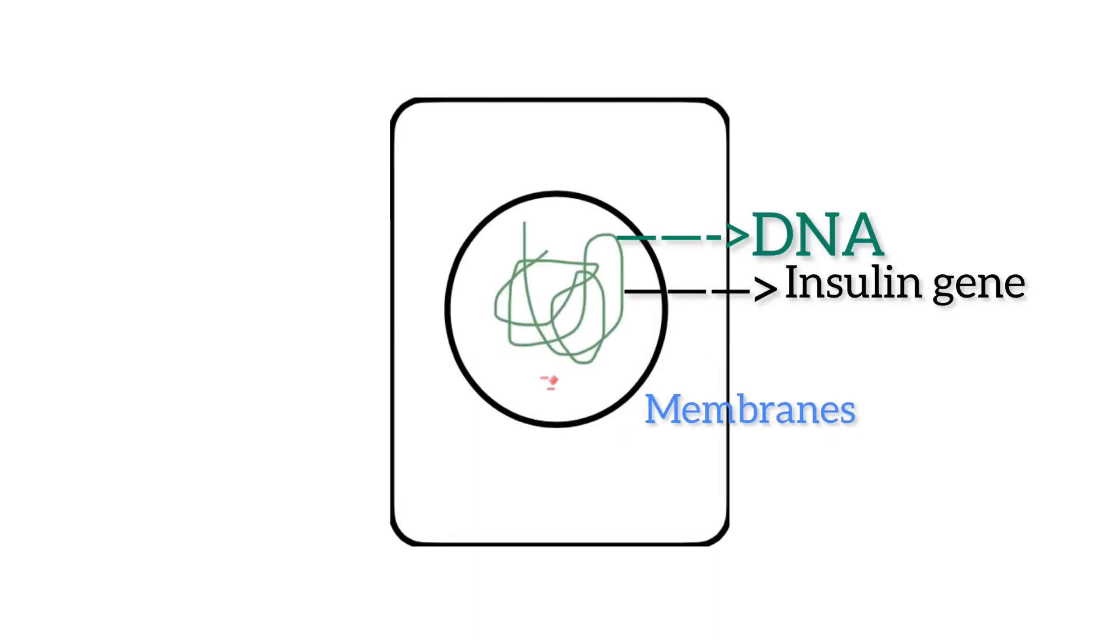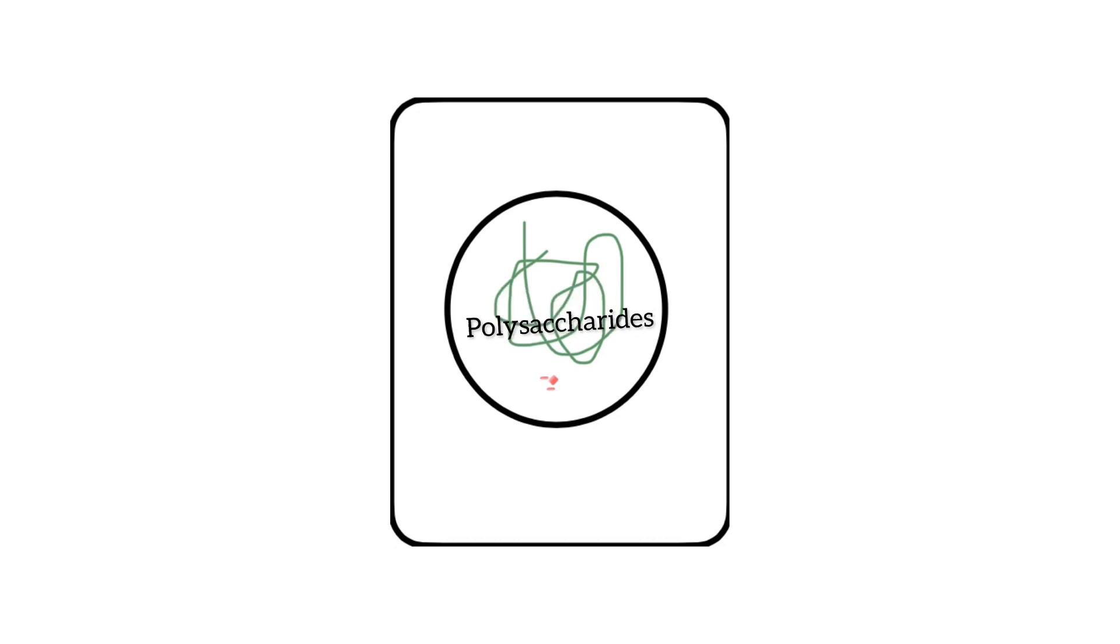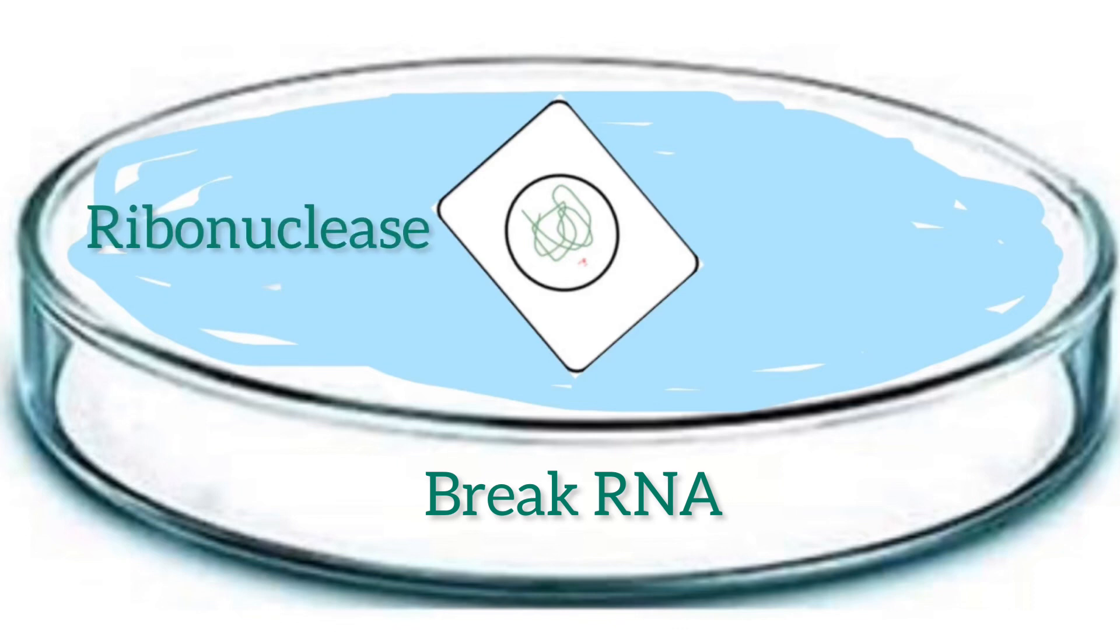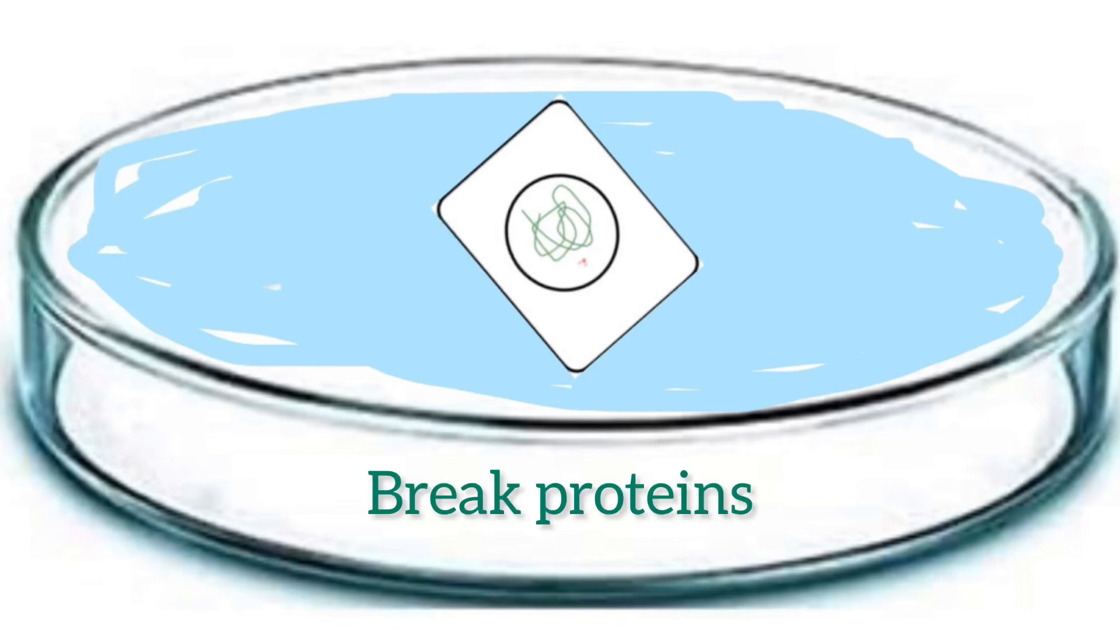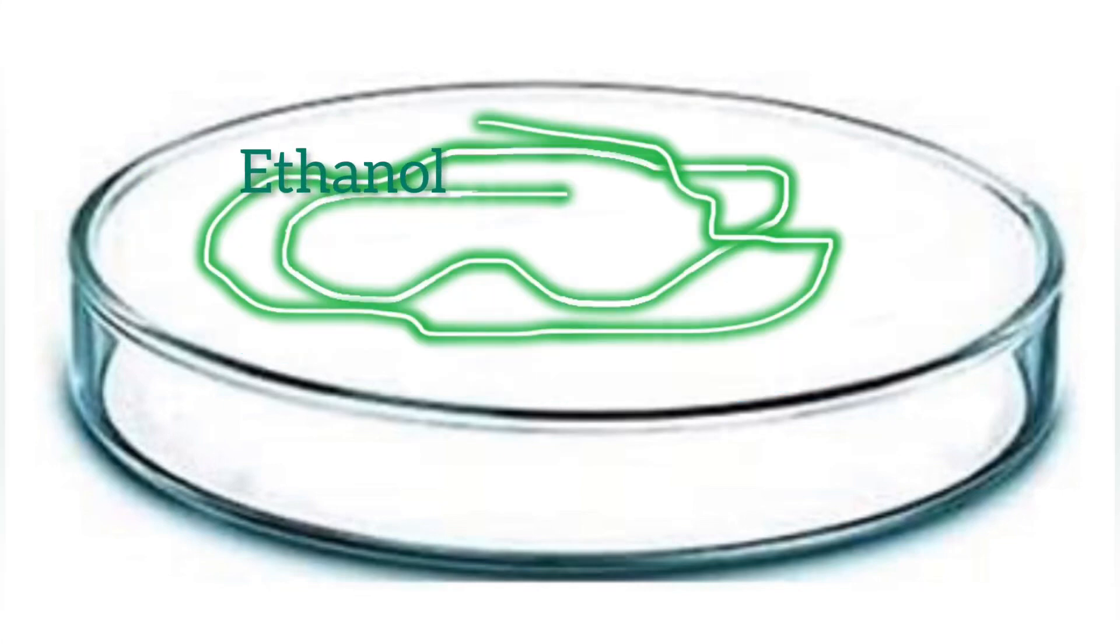Since DNA is enclosed within cell membranes, cells are treated with enzymes to break open the cell. The DNA is present along with macromolecules such as RNA, polysaccharides, proteins, and lipids. RNA can be removed by treatment with ribonuclease, whereas proteins can be removed by treatment with protease. Other macromolecules are removable with other enzymes or treatments. Ultimately, the addition of ethanol causes the DNA to precipitate out as fine threads.